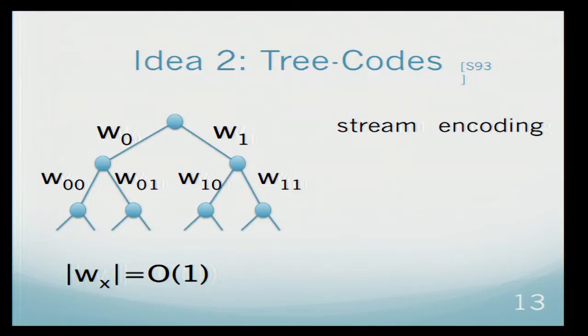The second code is tree codes as defined by Schulman in 93. This is just a code, it's a way to encode a string in an online manner. Practically, this is just a tree, where every edge has some label attached to it.